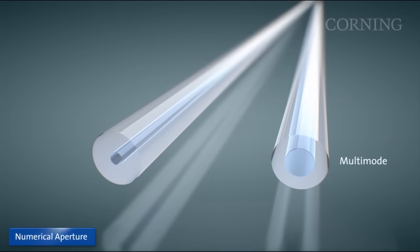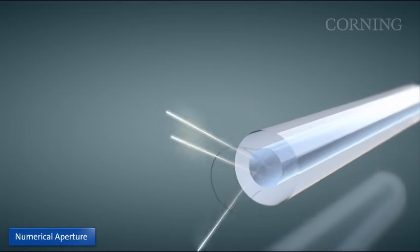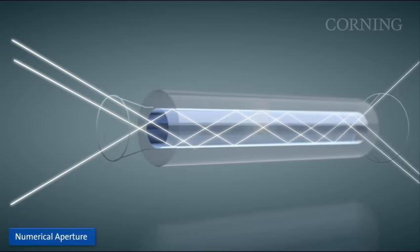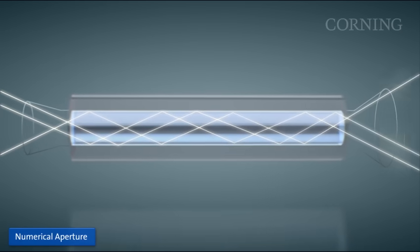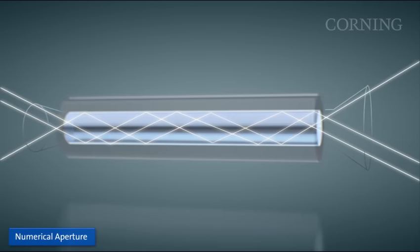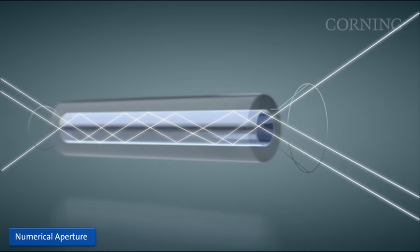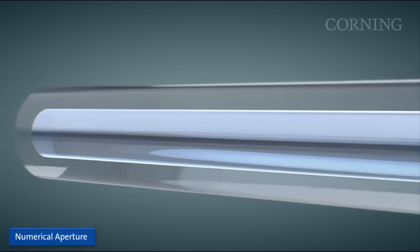Multi-mode fiber has two important characteristics, numerical aperture and core size. Numerical aperture is the measure of the angular range of acceptance of light into a fiber. The angle over which a fiber accepts light depends on the refractive indices of the core and cladding glass.